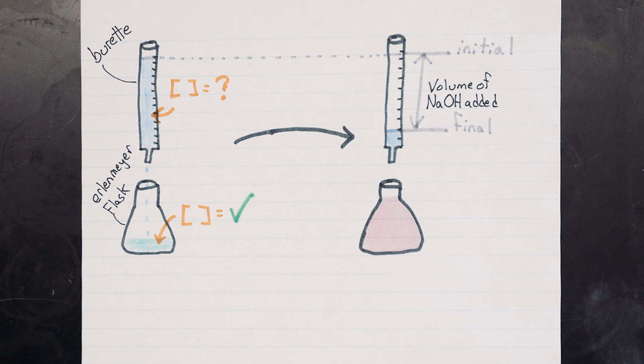In this lab, we'll be using potassium acid phthalate, or KHP, as a standard. We can calculate the number of moles of KHP accurately, and since KHP reacts in a one-to-one ratio with sodium hydroxide,